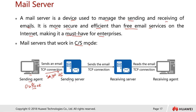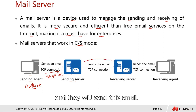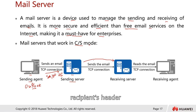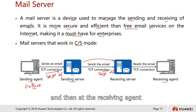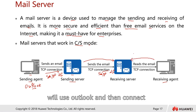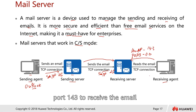When the user sends an email, a TCP connection is made to the sending server on port 25 using the SMTP protocol. The sending server forwards the email to the destination server based on the recipient's domain, also using SMTP port 25. To receive email, the client connects to the mail server using either POP3 on port 110 or IMAP4 on port 143.